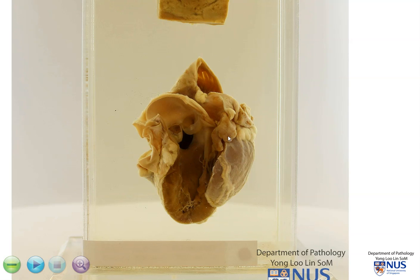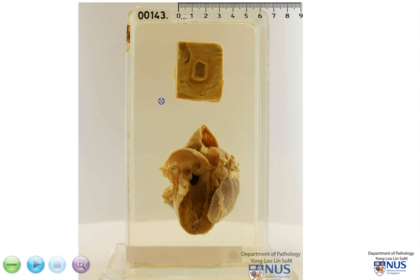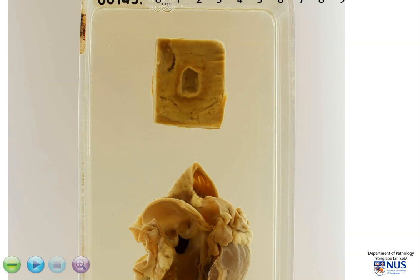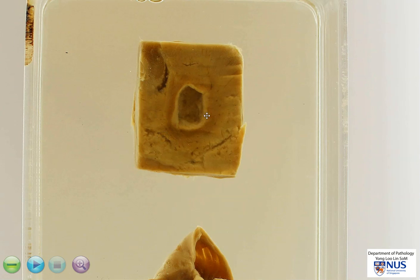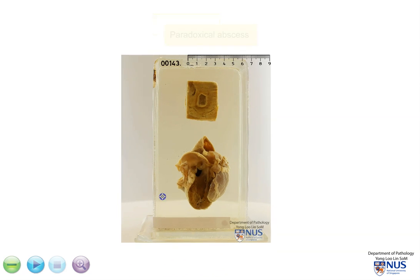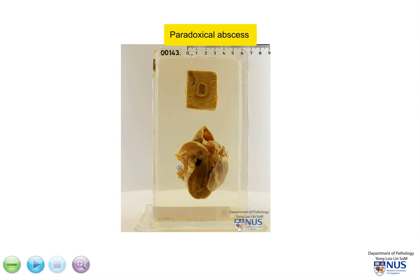Other things can also flow through from the venous system to the systemic circulation directly through the shunt, and this would include bacterial organisms. And this is what has happened here. If we now look at this other part of the specimen, which is actually the brain, we can see that there is a cavity in the brain — this is an abscess. In the context of a ventricular septal defect, this is known as a paradoxical abscess, because there has been right-to-left shunting and any bacteria in the bloodstream can seed into any organ in the systemic circulation.